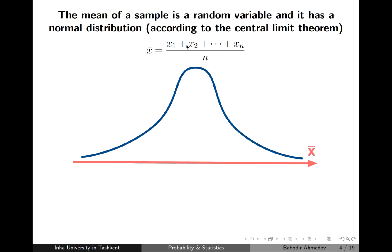Basically, if I choose a sample of n items, sum them, and divide by n, the result is going to have a normal distribution according to the central limit theorem. You can find a video overview of the normal distribution and the central limit theorem in the description.